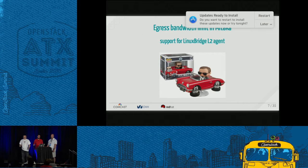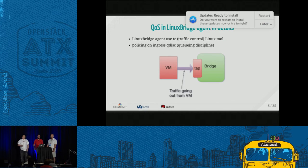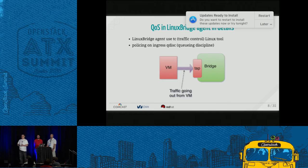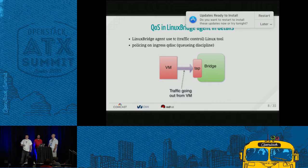In Mitaka we also provided support in Linux Bridge Agent for quality of service rules. Linux Bridge Agent uses the traffic control mechanism from Linux directly — for example, OpenVSwitch also uses traffic control underneath but it's a wrapper for the TC API. In Linux Bridge Agent we use traffic control directly, and we use policing on ingress Qdisk. A Qdisk is a kind of queue for packets.